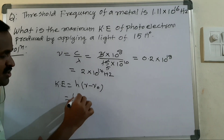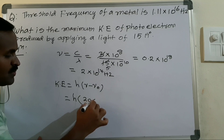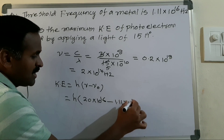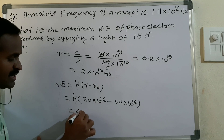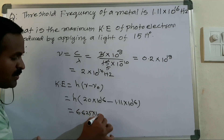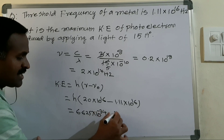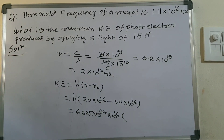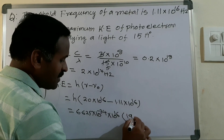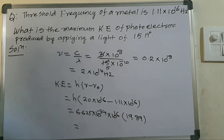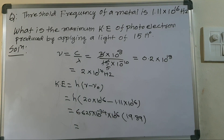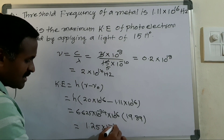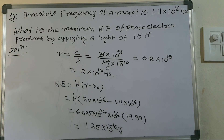Kinetic energy equals h multiplied by (nu minus nu-naught). nu is 20 into 10 power 16 and nu-naught is 1.11 into 10 power 16. Taking 10 power 16 as common, 20 minus 1.11 equals 18.89. Multiplying by h equals 6.625 into 10 power minus 34, after simplification you will get kinetic energy equals 1.25 into 10 power minus 16 joules.